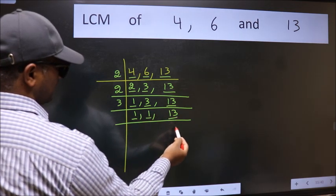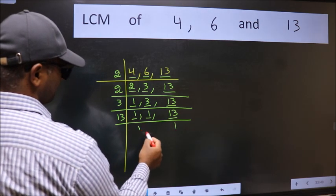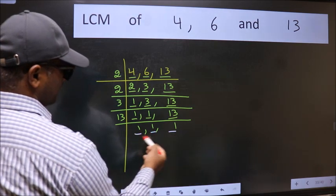So focus on the next number 13. 13 is a prime number. So 13 wants 13. So we got 1 in all the 3 places.